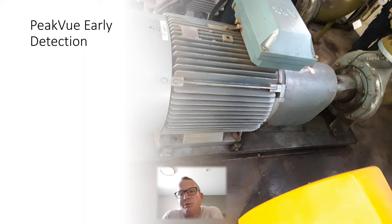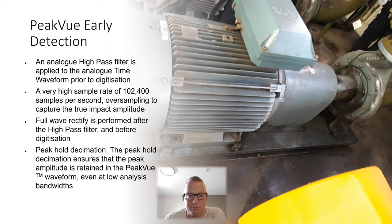Now Emerson has got some unique processes in the way the technology works, which is unique to them, which makes it why it works so well. Very basically, we've got an analog high pass filter applied to the analog time waveform, part of the equalization. The bit which sets them apart is this bit here, where it actually samples at a rate of 102,400.